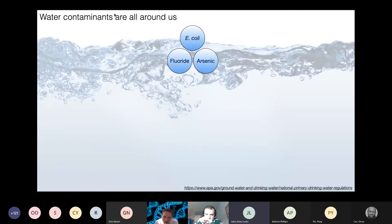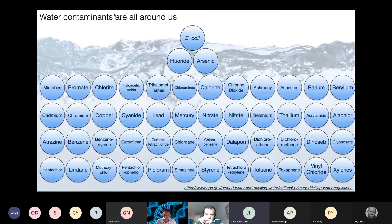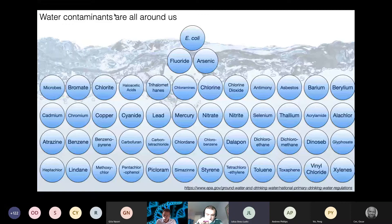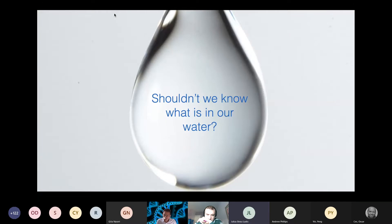If you look at the contaminants that are of global concern, these are the top three: E. coli, fluoride, and arsenic. But if you dig under the hood at other lists, this one is from the U.S. EPA, it lists a whole range of compounds that are regulated and even many more that are not regulated. And I think what is striking here is that it's a really complex problem to try to figure out how you're going to measure all of these different things to assess water quality. But it does beg the question, shouldn't we all know what is in our water to be able to make healthy decisions?